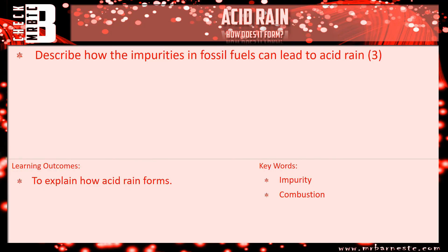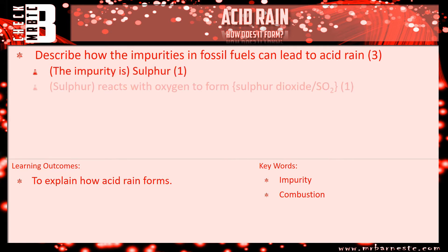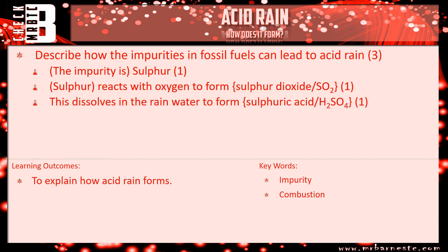Okay, let's go through. What's the impurity? Simply sulfur — that gets you one mark. That sulfur reacts with oxygen to form sulfur dioxide, SO2 — that gets you the second mark. Your third mark is for saying that SO2 dissolves in rainwater and forms sulfuric acid, H2SO4. You can also talk about the sulfurous acid H2SO3, or just skip straight to H2SO4 to get the third mark.